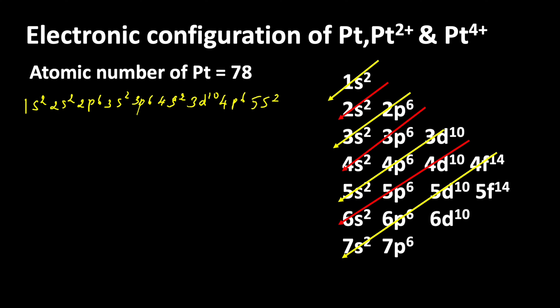After 5s², electrons enter into 4d orbital: 4d¹⁰, 5p⁶, 6s², 4f¹⁴, and 5d⁸. If you count all these electrons, you will get the atomic number of platinum. That is the maximum number of electrons available in platinum. But this is not the correct electronic configuration of platinum.